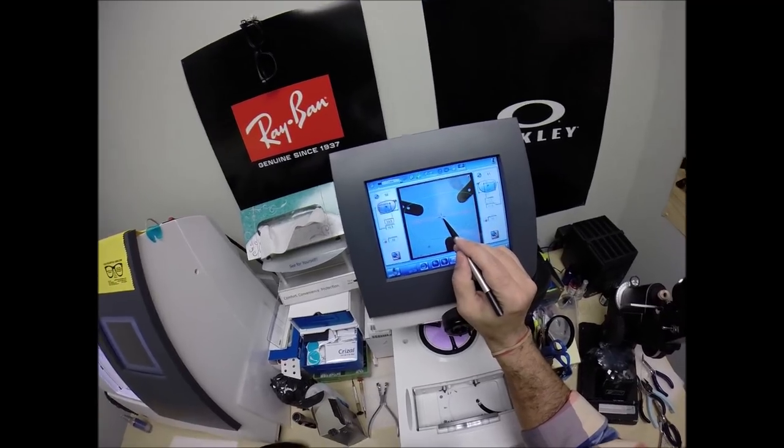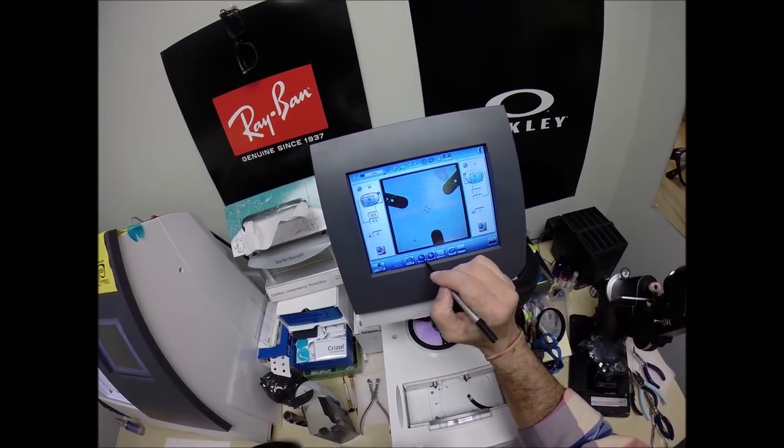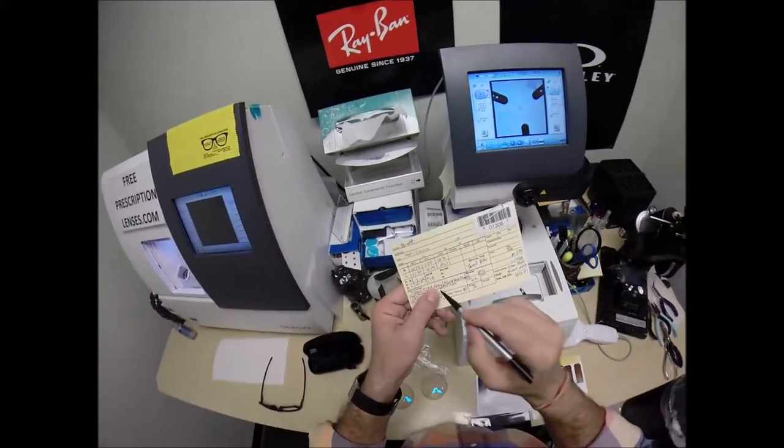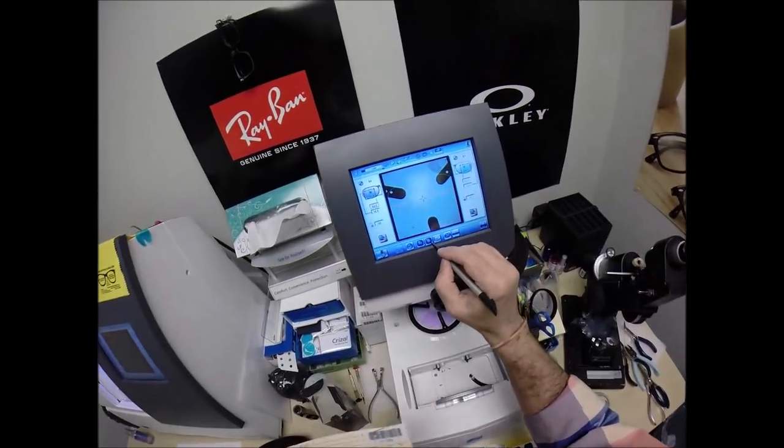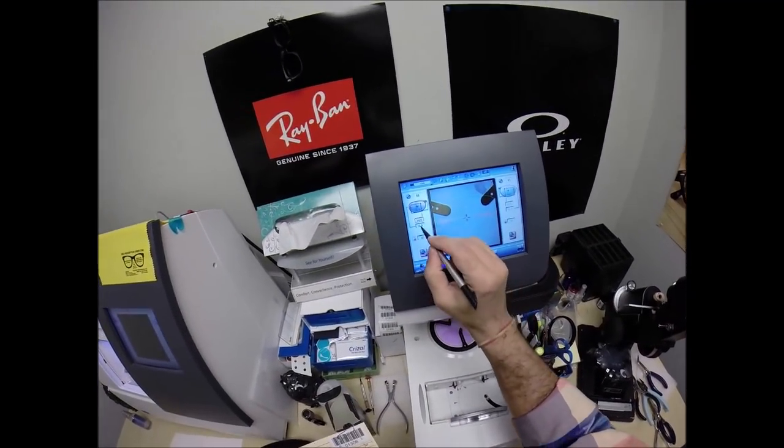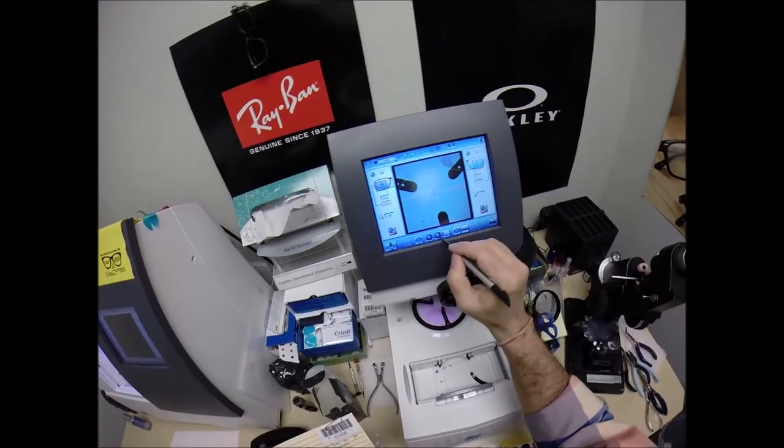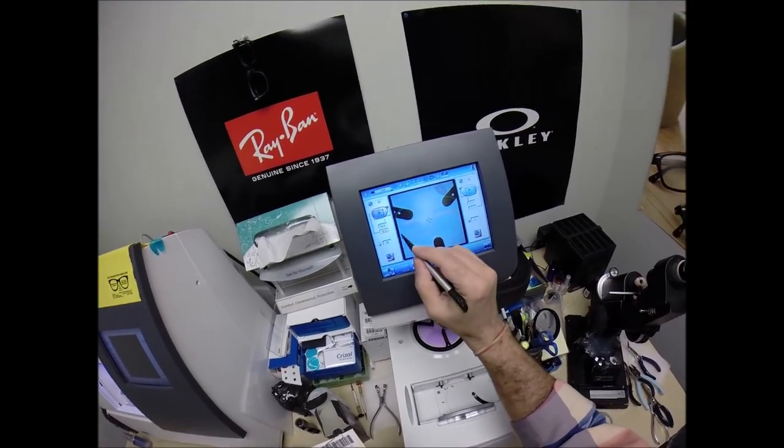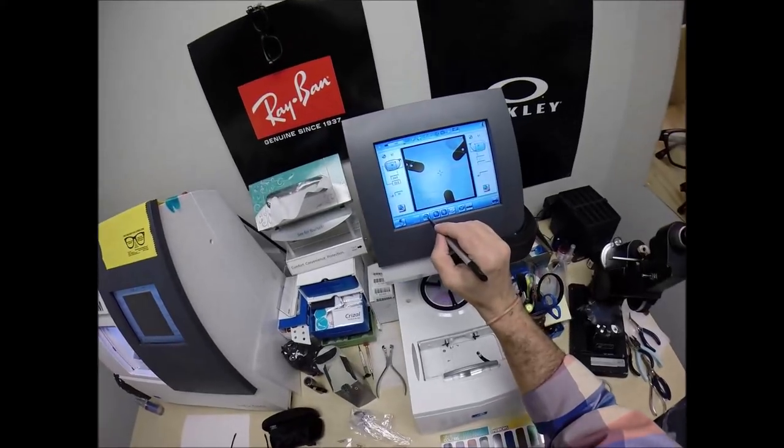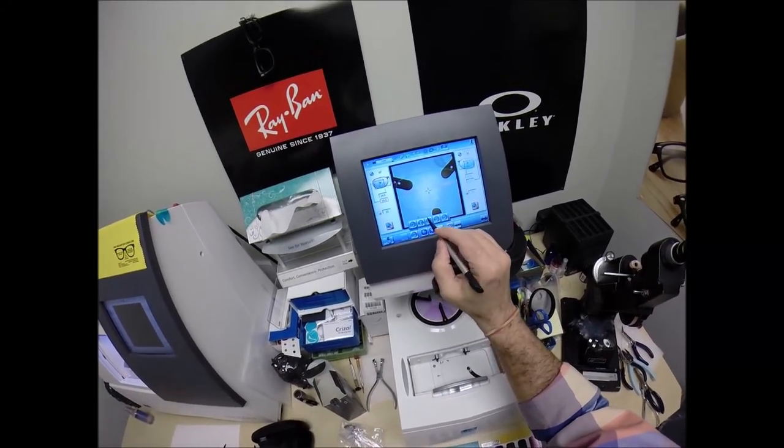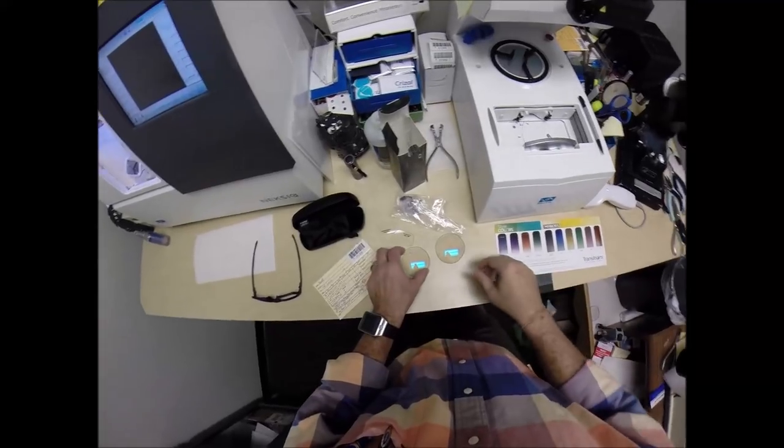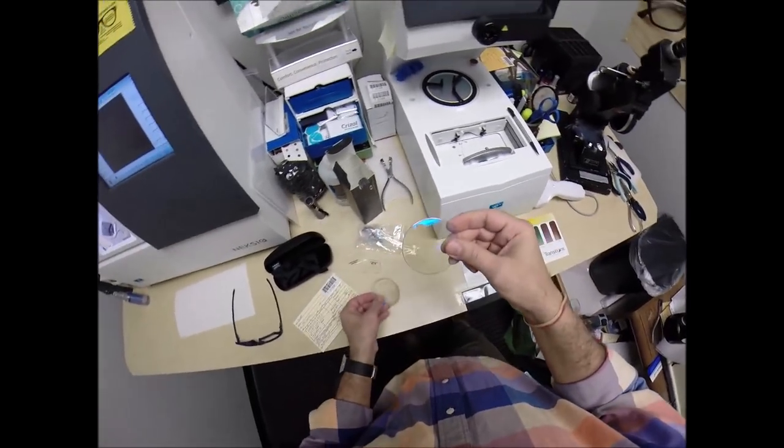Dead center is 34.5, the geometric center of your frame. Your eye is going to be just above that at 19 millimeters. Now I'm going to change the layout screen. This is for single vision. I'm going to do a progressive lens.